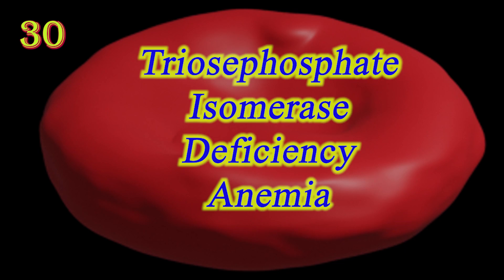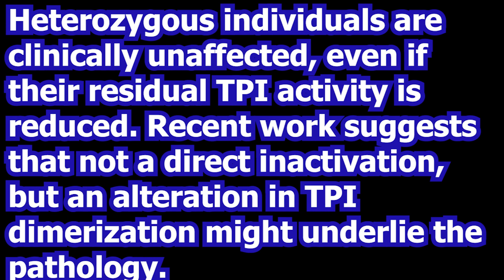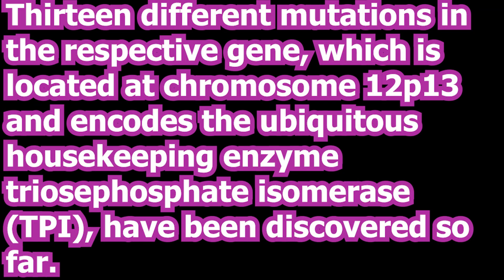Triose phosphate isomerase deficiency is a rare autosomal recessive metabolic disorder. It is a unique glycolytic enzymopathy characterized by chronic hemolytic anemia, cardiomyopathy, susceptibility to infections, severe neurological dysfunction, and in most cases death in early childhood.